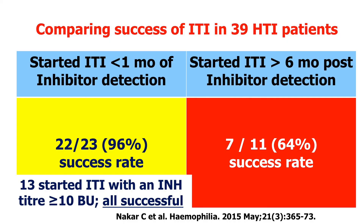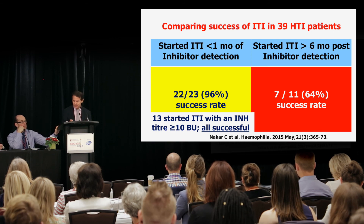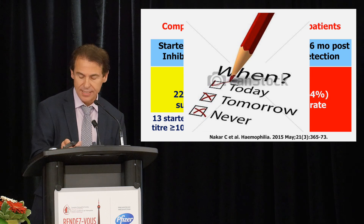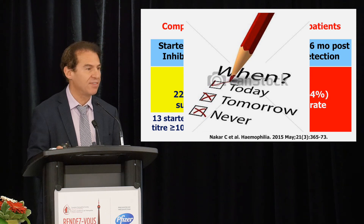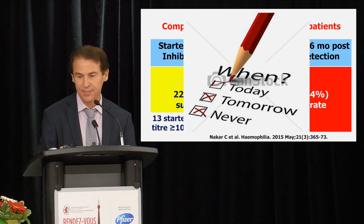Within those 23 patients who started ITI within a month, 13 of them had an inhibitor titer of 10 Bethesda units or more, and all of them were successfully tolerized. So when do you start? I think you should start immediately. We try to start within one week of inhibitor development.